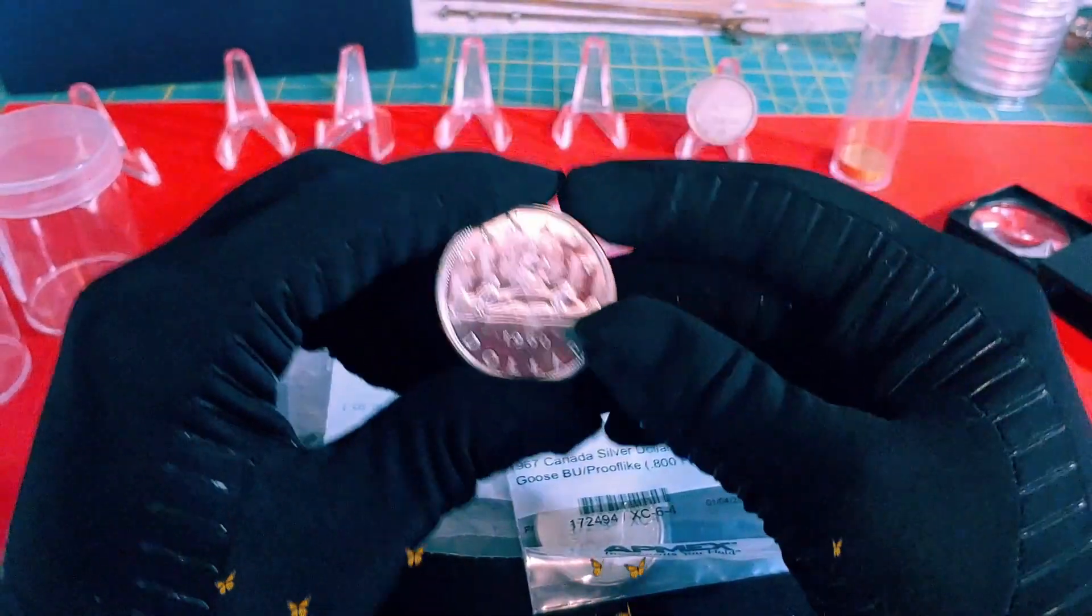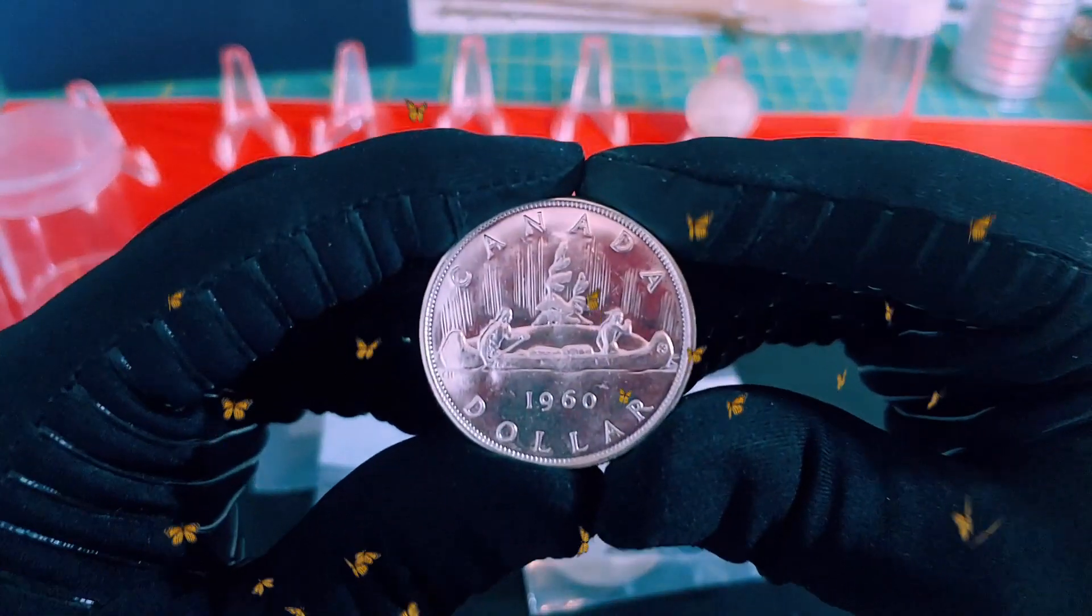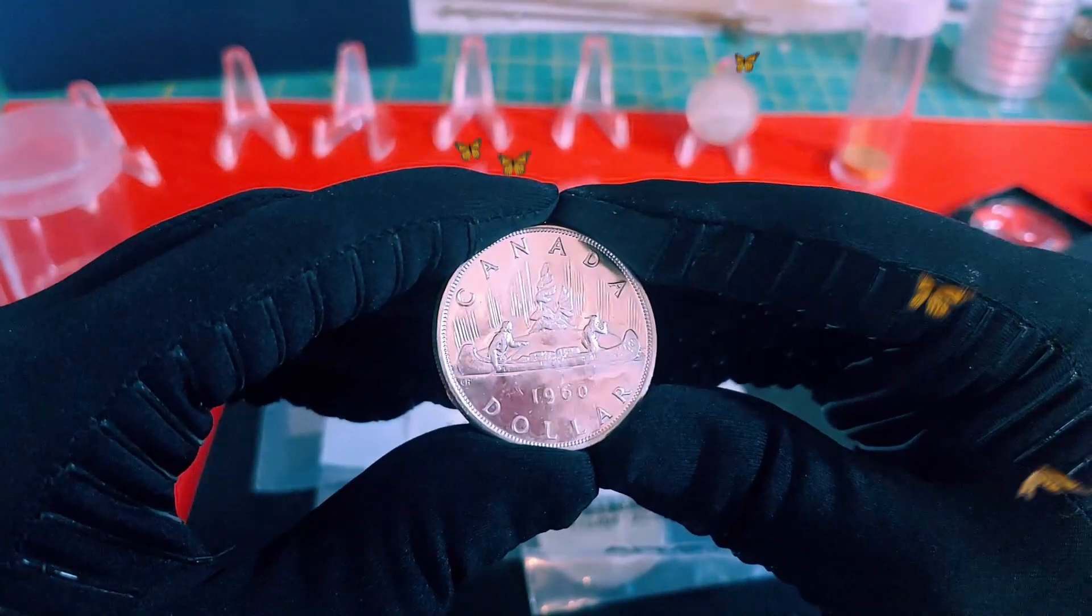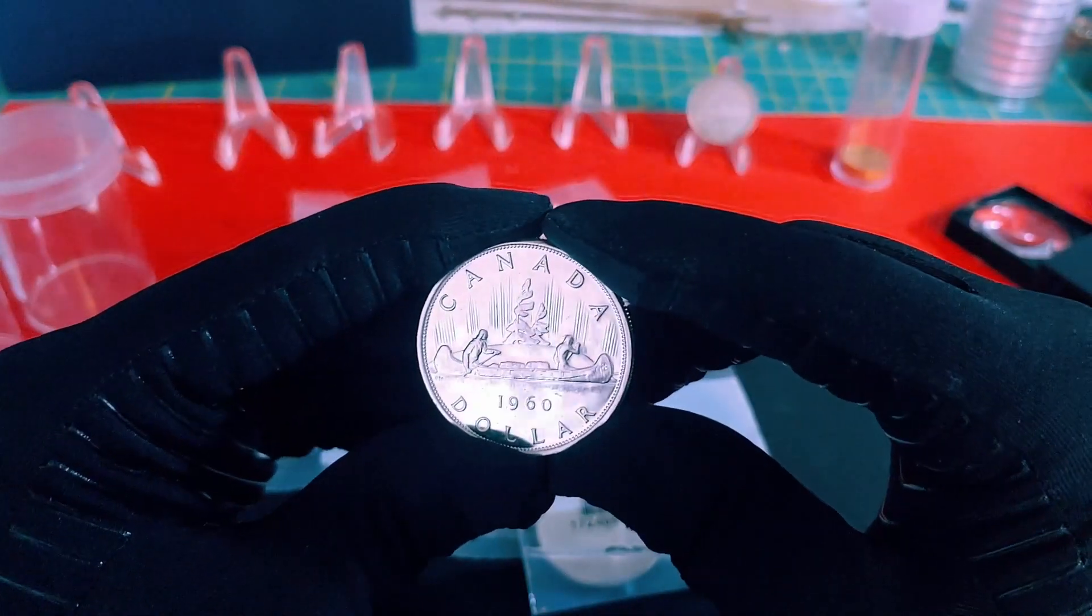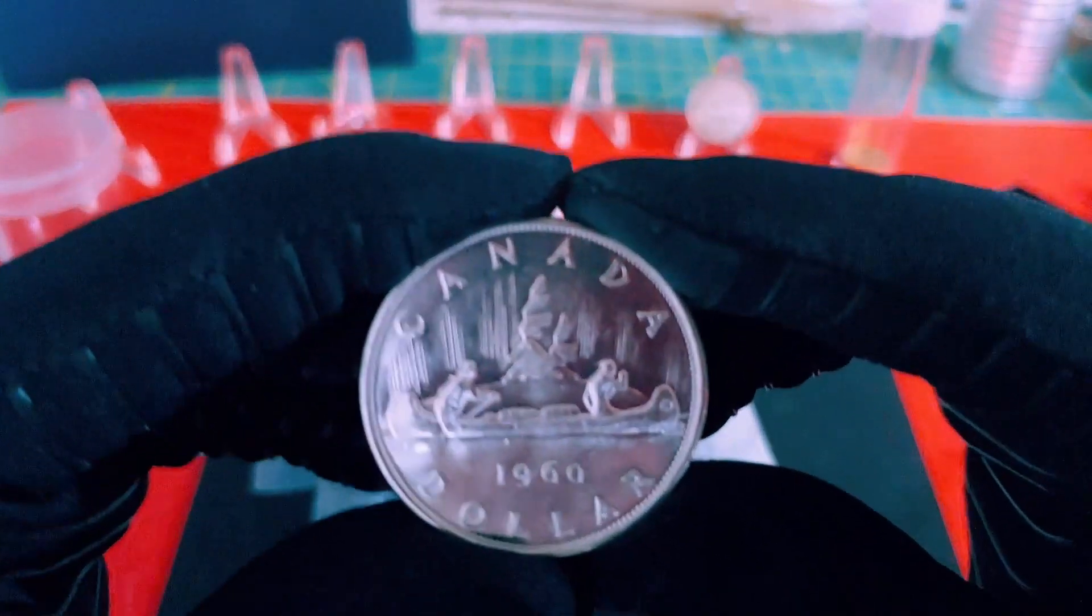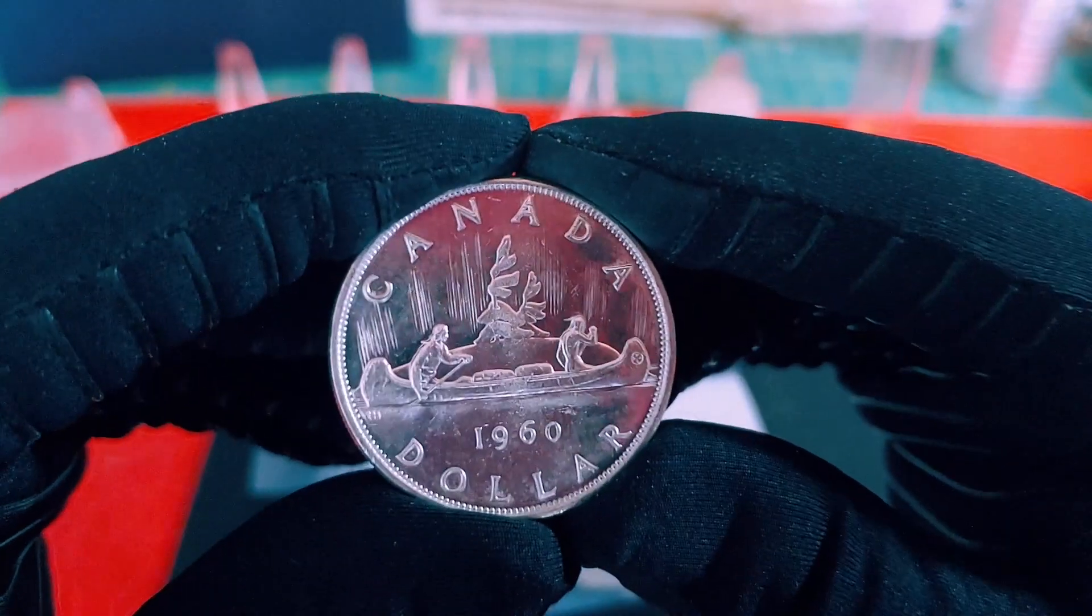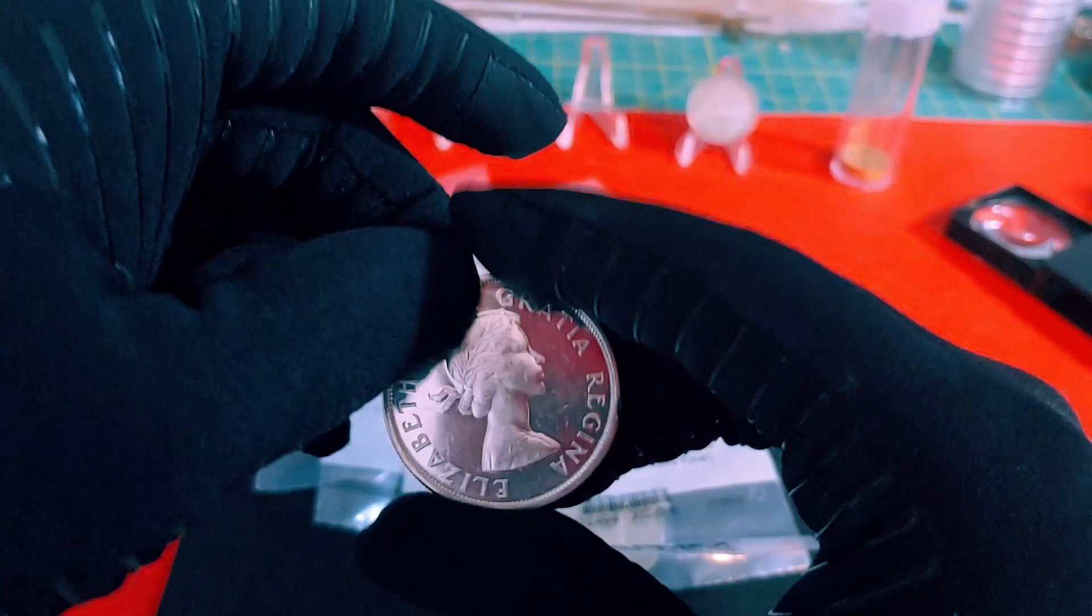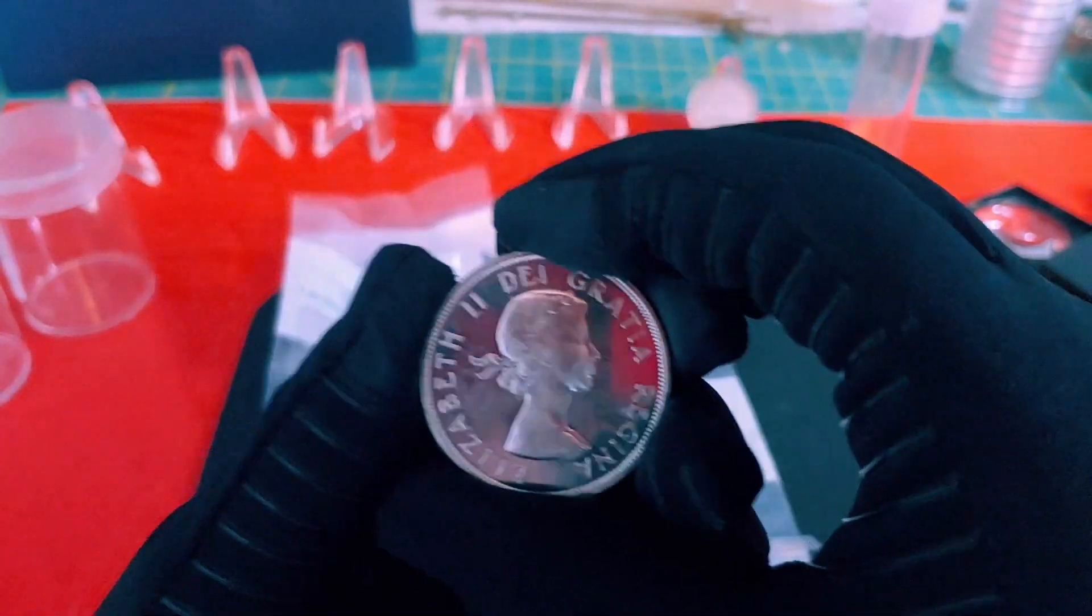I'm going to start zooming in now so guys can take a better look at these coins. That's what you're here for, right? So this is a BU version, 1960, with Young Queen Elizabeth on the back. I've shown these in plenty of videos before.